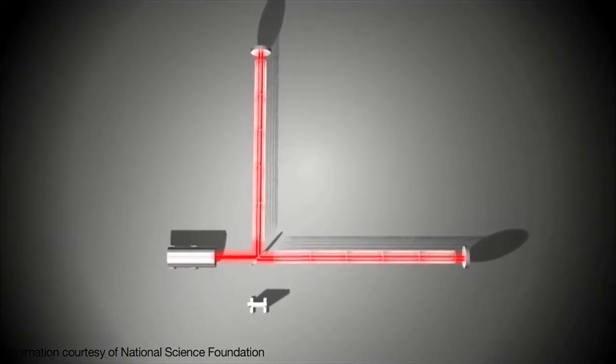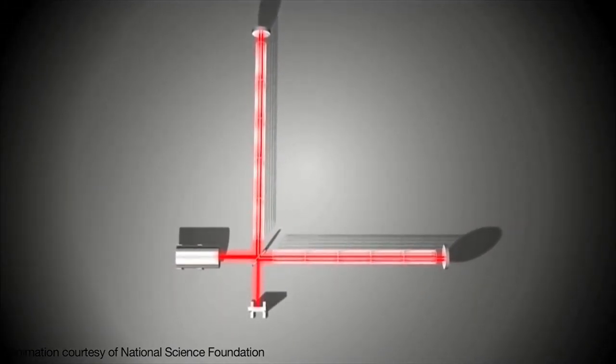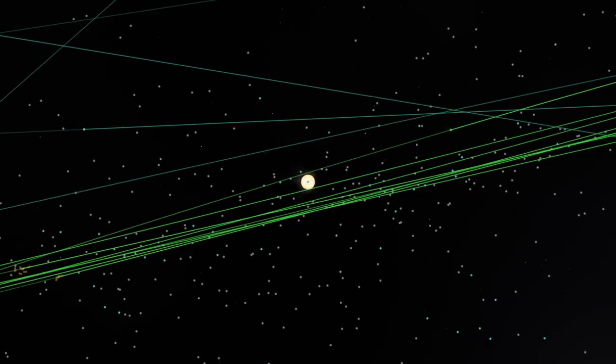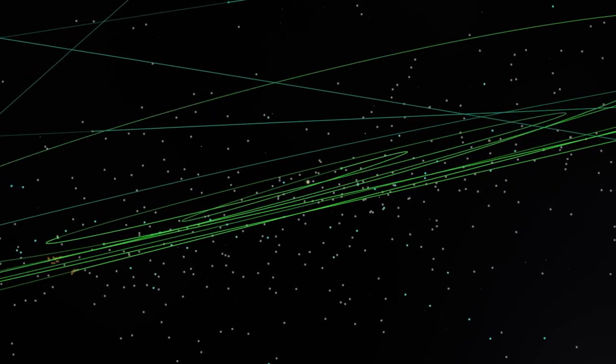Adjusting the mirrors is a daily chore because their positions and angles tend to slowly wander as a result of temperature changes, mechanical flexing of the hardware, and even the position of the moon in the sky.